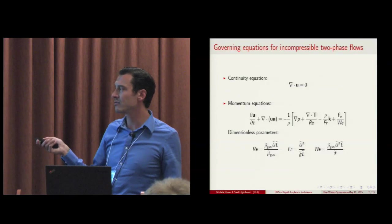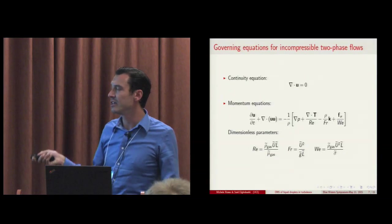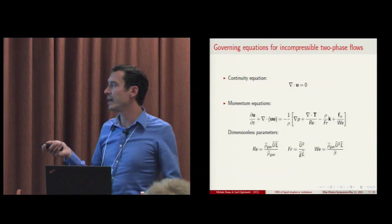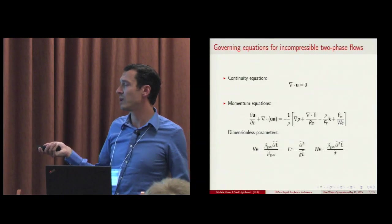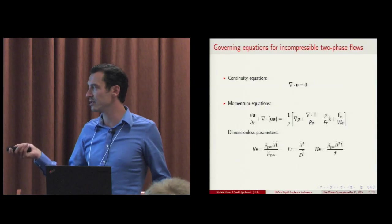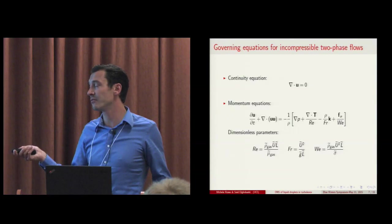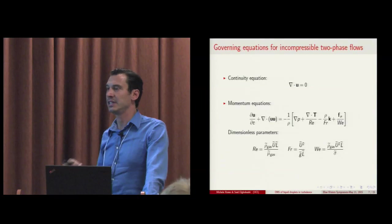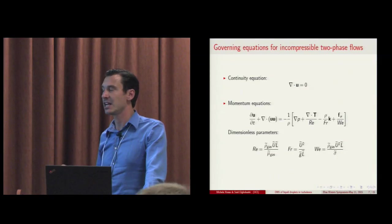Plus a term that you can see here that accounts for the surface tension between the two phases. The whole simulation is ruled by three parameters: the Reynolds number, the Froude number, and the Weber number. All of them, in our case, are computed by using the gas phase as a reference.